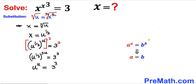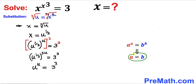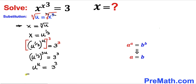Now let's recall this crucial fact: if we have a power a on the left hand side equals to b power b on the right hand side, then we can write a equals to b. Here in our case we got u power u equals to 3 power 3, so therefore we conclude that u is going to be equal to 3.